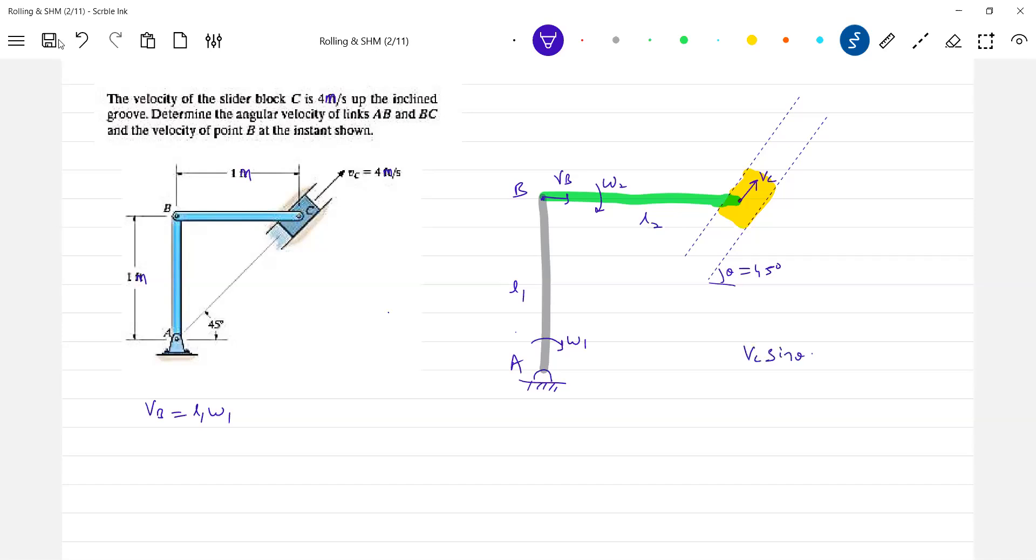Vc sin theta should be equal to L2 Omega. From that I'll get the Omega 2.